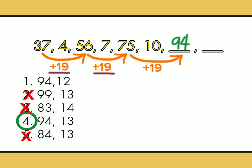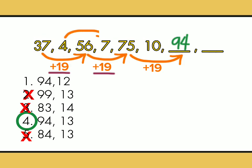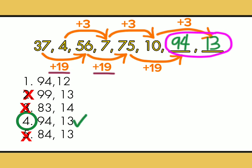So, balik tayo dito sa series. Dahil alternate ang pattern nitong 37, 56, 75, alternate din natin itong 4, 7, and 10. Obvious na ito, because 4 when increased by 3 is 7. And 7 when increased by 3 is 10. So, plus 3 ang pattern dito. Ibig sabihin, 10 plus or increased by 3 is 13. So, 13 dito. So, 94 and 13 is the correct answer.